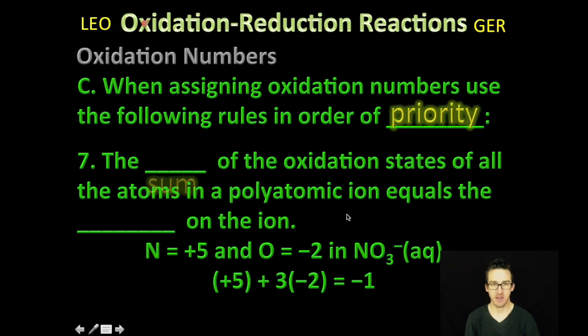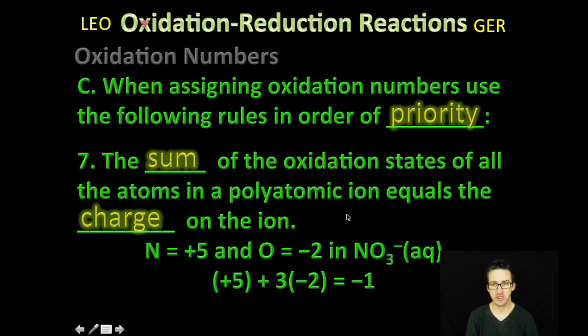And rule number seven. The sum of all the oxidation states or oxidation numbers of the atoms in a polyatomic ion equals the charge on that ion. Now, here's where you may begin to feel a little uncomfortable about the newness of oxidation numbers and why, for example, we're assigning the oxidation number of nitrogen a positive five here. Oxygen seems pretty straightforward, negative two. But why nitrogen positive five? It comes back to that table of priority. Boom!